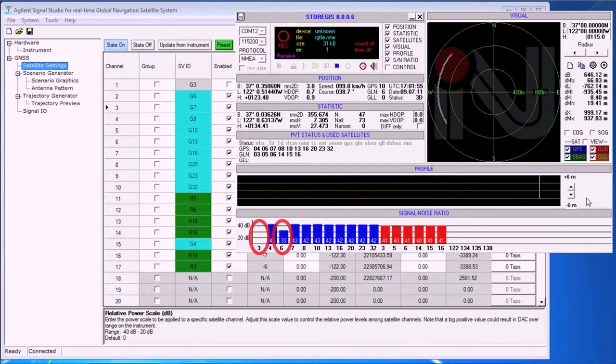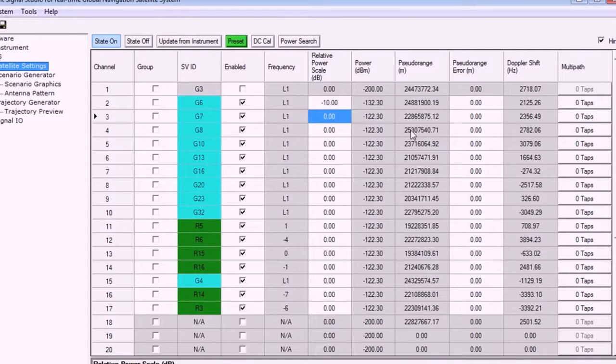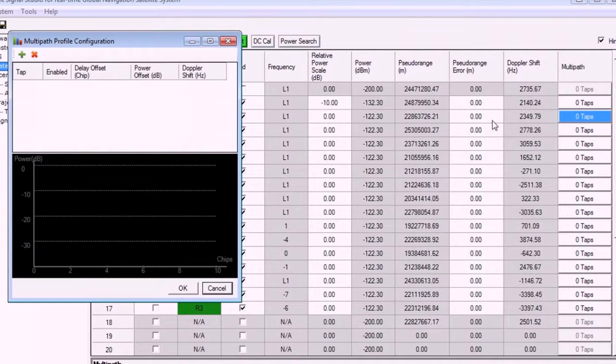Now, let's add a multipath to satellite G7. We can configure the delay, power, and Doppler shift.